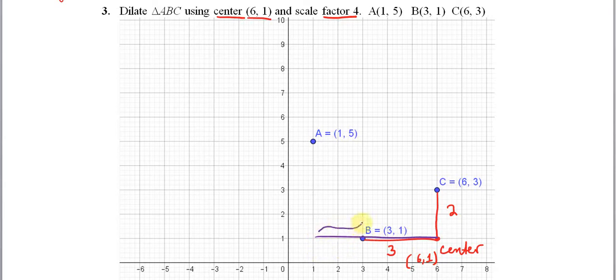And then the vertical part here, this purple line segment I'm going from a y-value of 1 up to a y-value of 5, so that's a distance of 4. So this purple line segment right here.